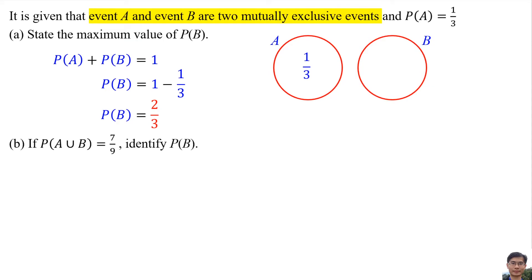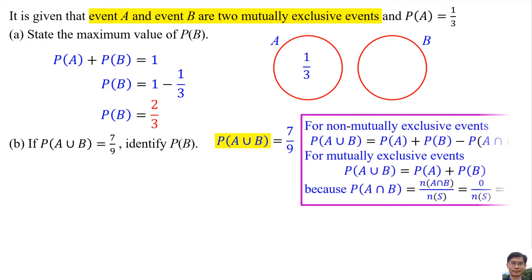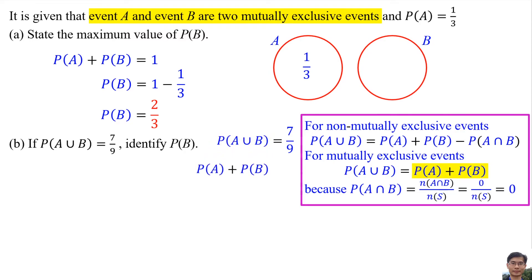Part (b): If the probability of A union B is equal to 7 over 9, identify the probability of event B. The probability of event A union event B can be written as the probability of event A plus the probability of event B. The probability of event A is 1 over 3.